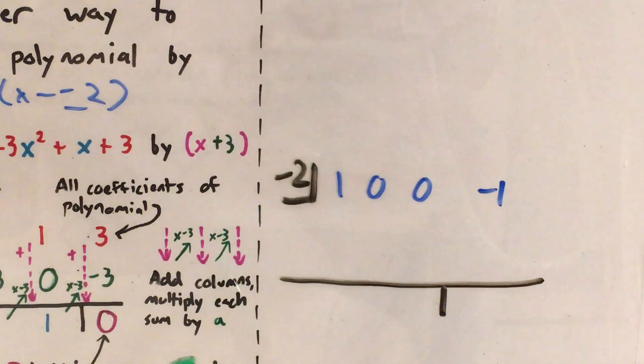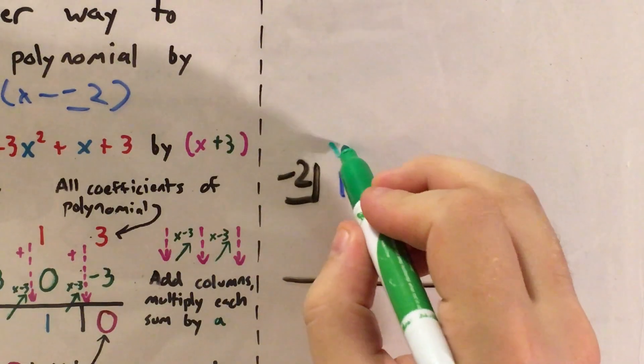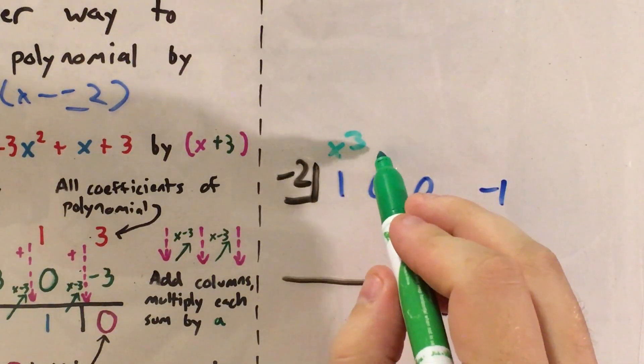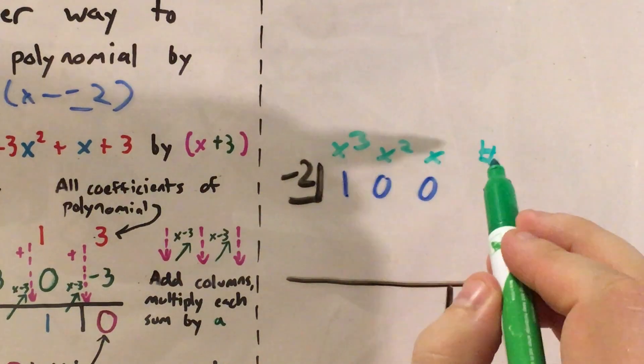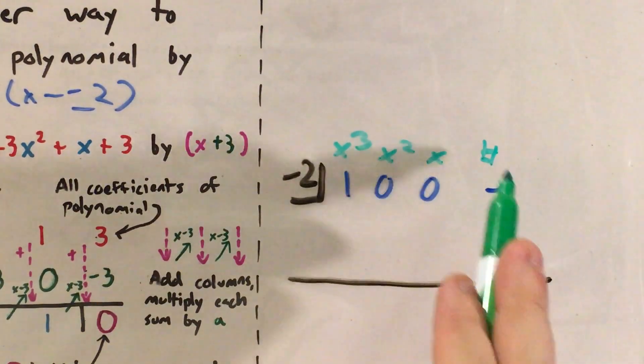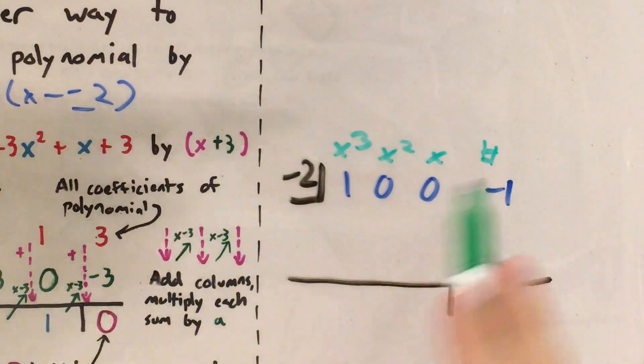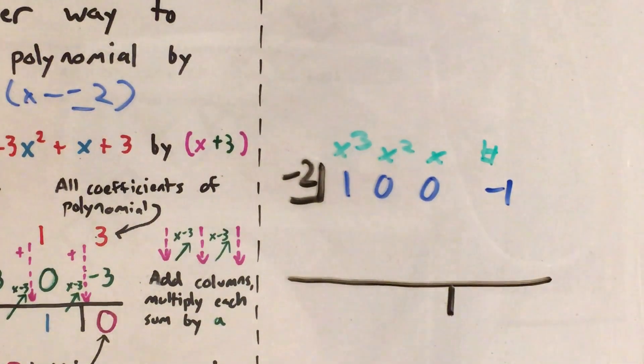I'm testing the number negative 2, and I have 1x cubed plus 0x squared plus 0x minus 1. So I have a coefficient from every power of x, including my constant here. And so now I go through the actual process of synthetic division.